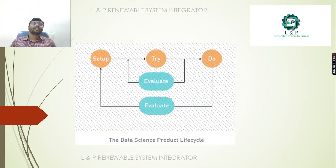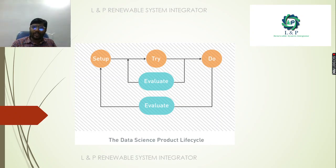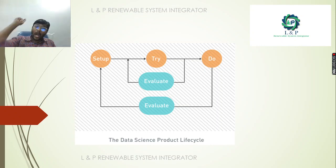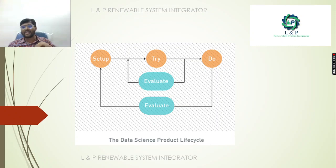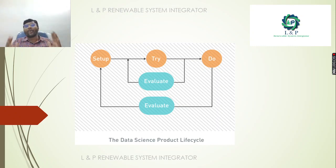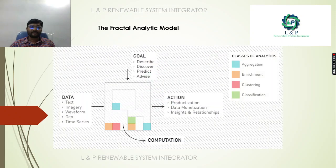The data science product life cycle: we set up, try things out, and take actions. Even after the action has happened, we take the output, evaluate it, and use it as input for the next operation. It is a closed feedback loop — we use the feedback from the output of the 'Do' phase and try to evolve it and utilize it in our setup.